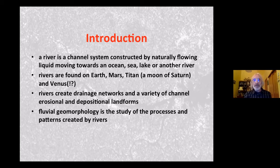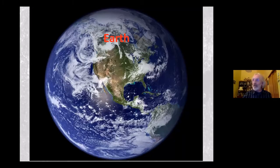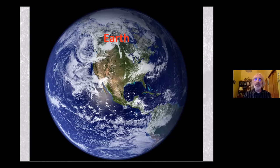Fluvial geomorphology — fluvial from the Latin fluvius for river, geomorphology being the study of the landscape or landforms — is the study of the processes and patterns created by rivers, and that's my moniker as a fluvial geomorphologist. Most of our knowledge of rivers comes from Earth, and in most studies of extraterrestrial rivers, Earth analogs are used as counterparts for what is seen on Mars, Titan, or even Venus.